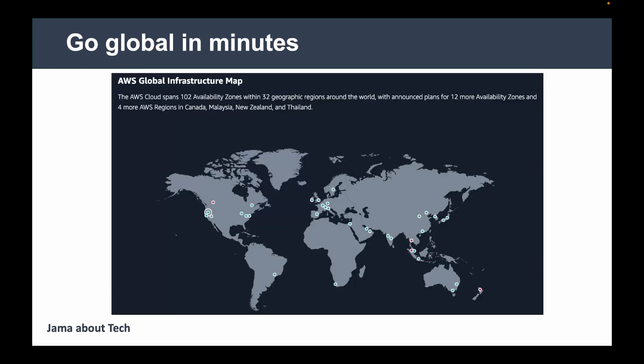This map shows AWS presence points. Currently they have 102 availability zones within 32 geographic regions, with 12 more availability zones and 4 more AWS regions coming soon — marked in red on the map, while current locations are in blue. AWS has a very strong presence at many points all over the world. The 32 geographic regions are broader geographical areas, while the 102 availability zones are smaller, more specific presence points of AWS solutions.